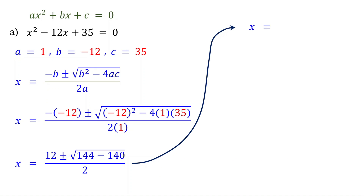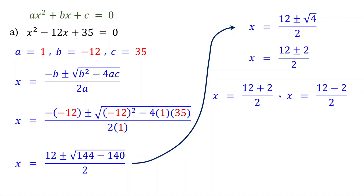144 minus 140 is 4. The square root of 4 is 2. This is the same as x equals 12 plus 2 over 2, or x equals 12 minus 2 over 2. 12 plus 2 is 14, and 12 minus 2 is 10. Dividing 14 by 2 gives us 7, and dividing 10 by 2 gives us 5. Therefore, the solutions are x equals 7, or x equals 5.